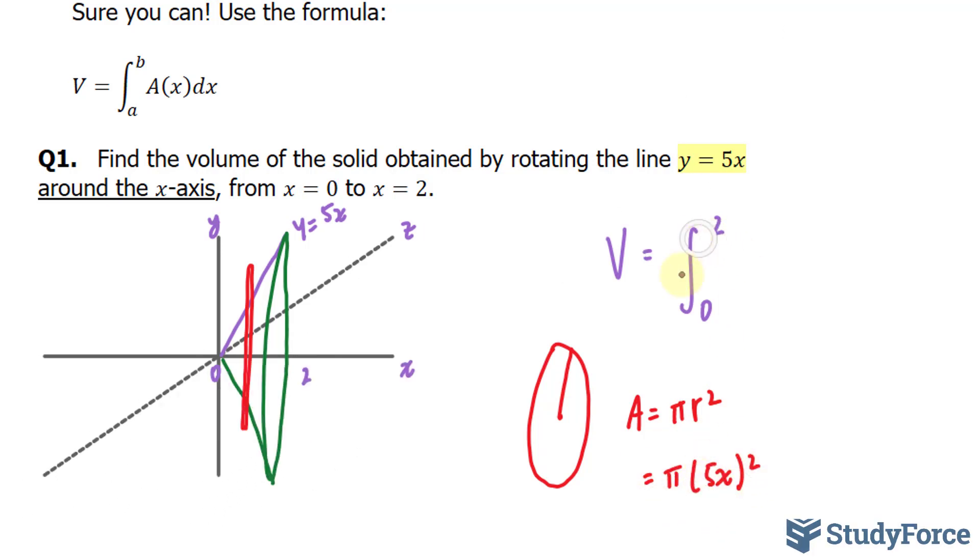So if we replace r with 5x squared, and then subsequently replace this into the integral, pi bracket 5x squared, and we find the integral of this function, we will end up with the volume of this cone. Let's go ahead and do that.